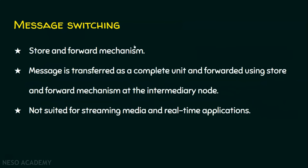In message switching, it uses a store-and-forward mechanism. The message is transferred as a complete unit and forwarded using store-and-forward at the intermediary node. If a sender wants to send big data, it is broken into individual pieces, each transmitted to the intermediary node. The intermediary node receives all the pieces, constructs the full message, and only then forwards the data.